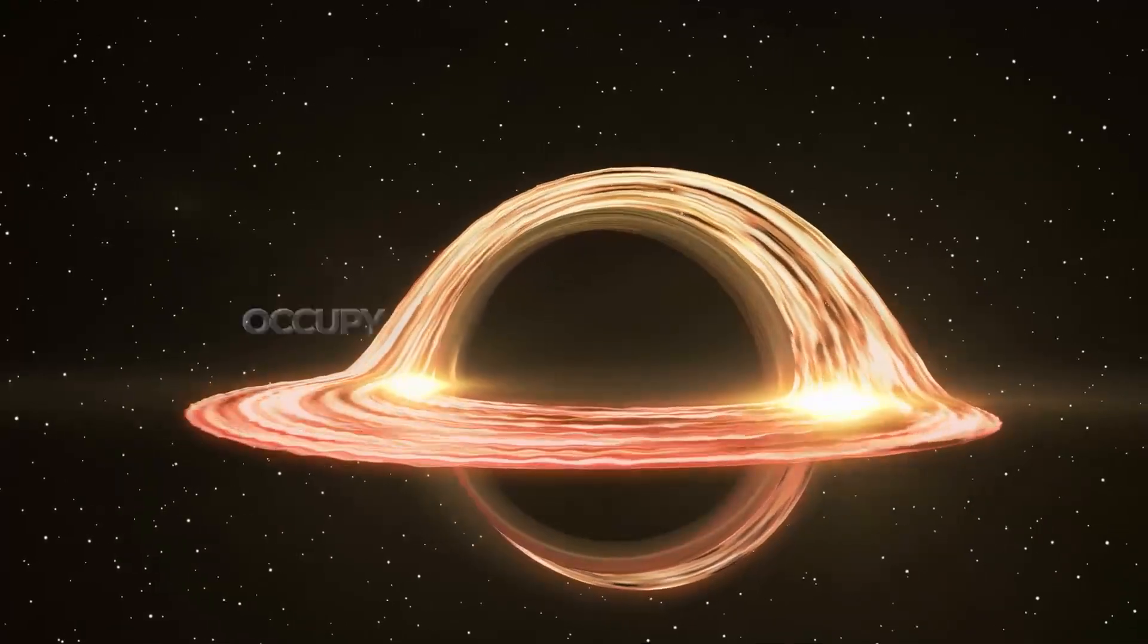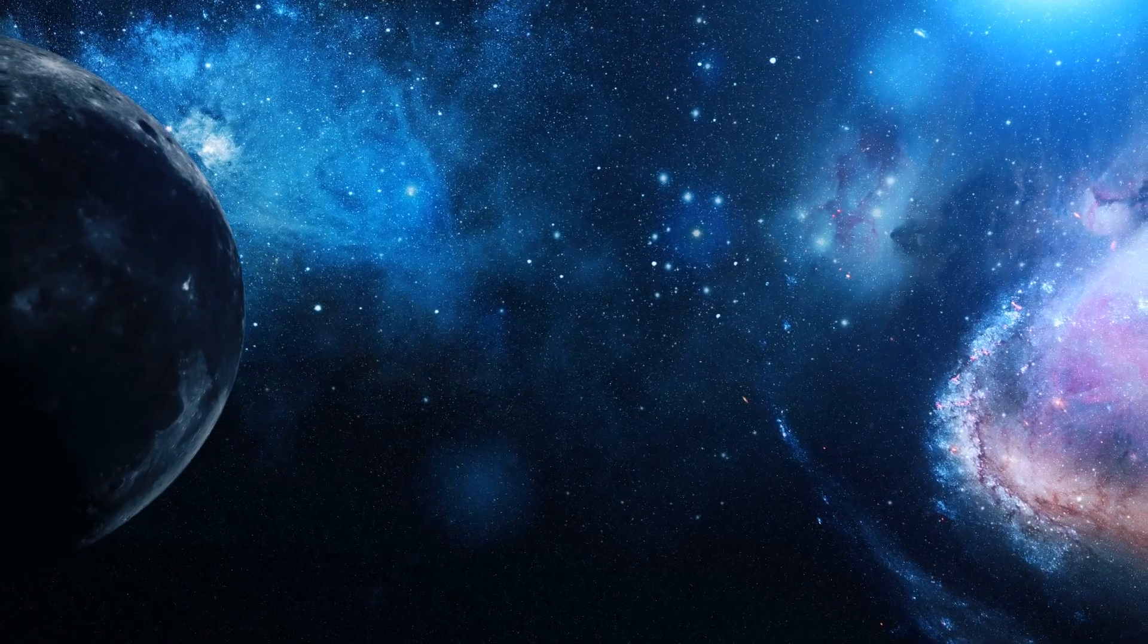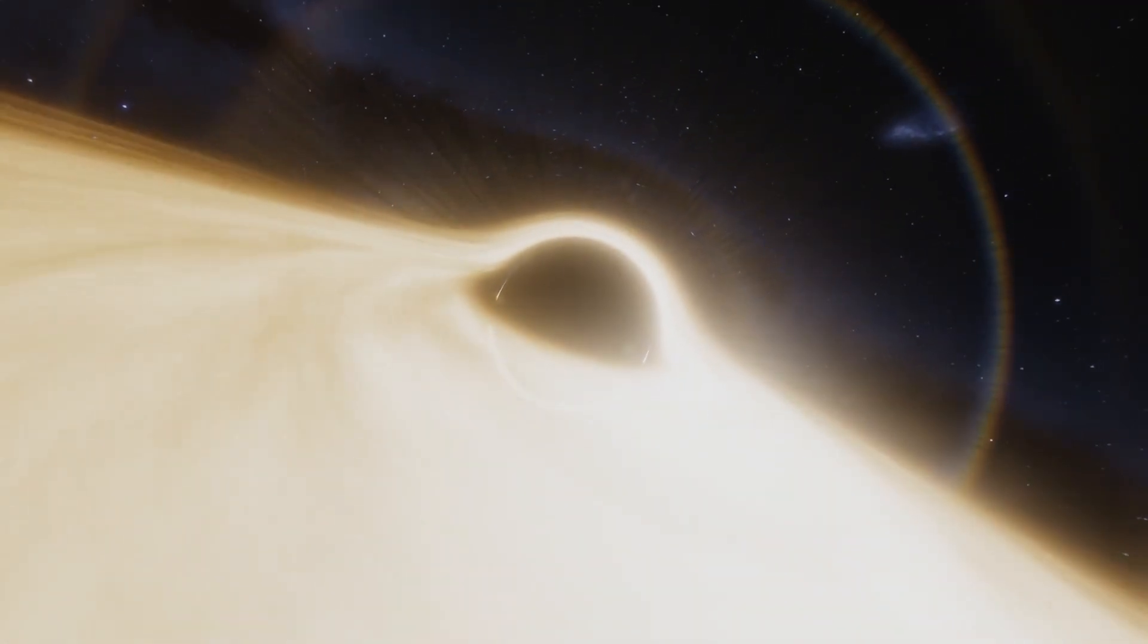The black hole that would now occupy the location of the former Earth would orbit the Sun, while the other planets would continue to be in their current orbit. However, slightly affected by the events.